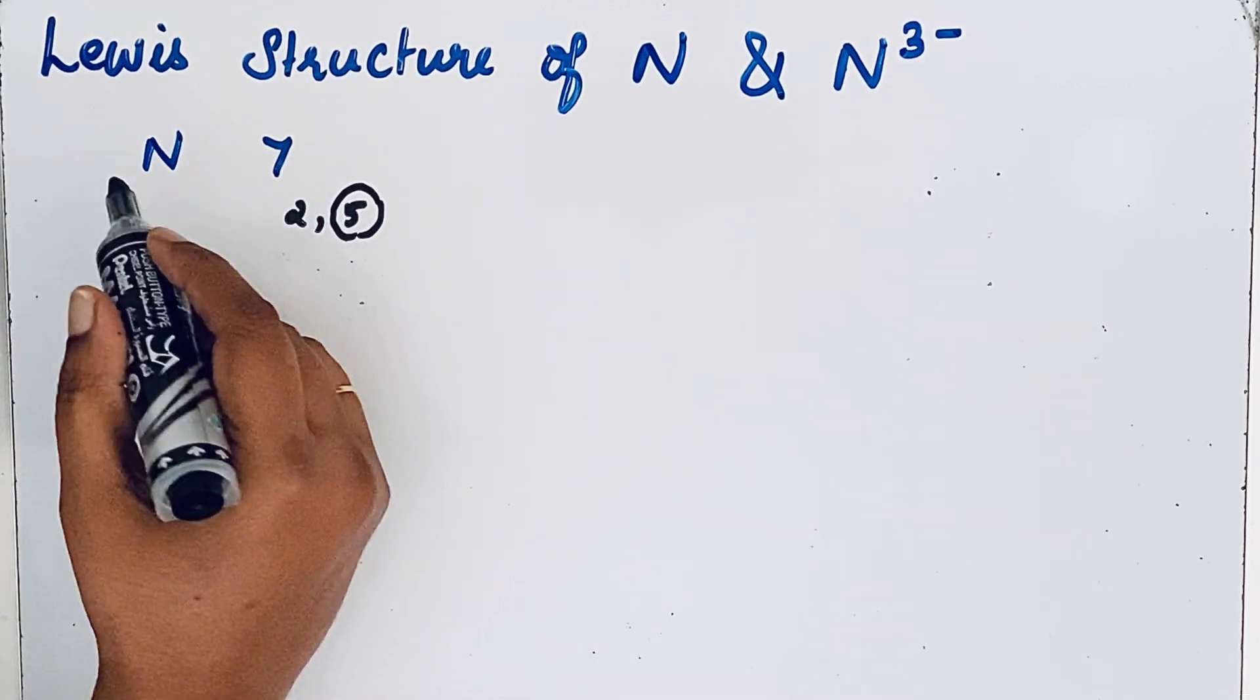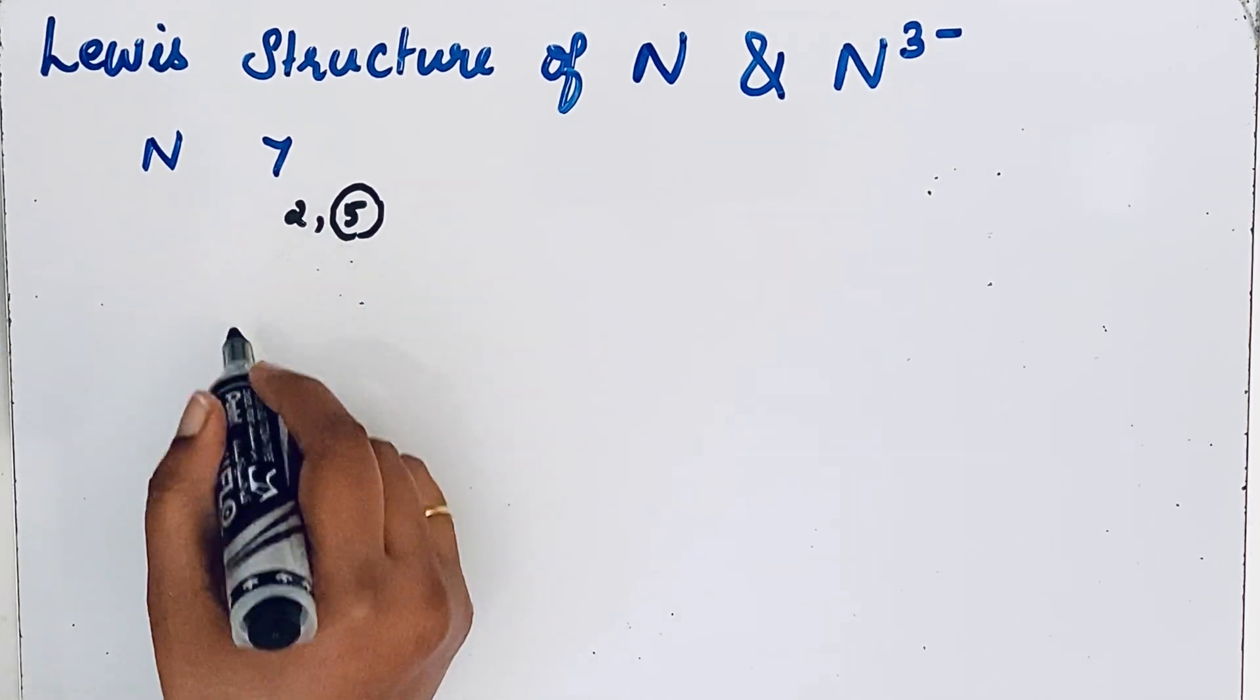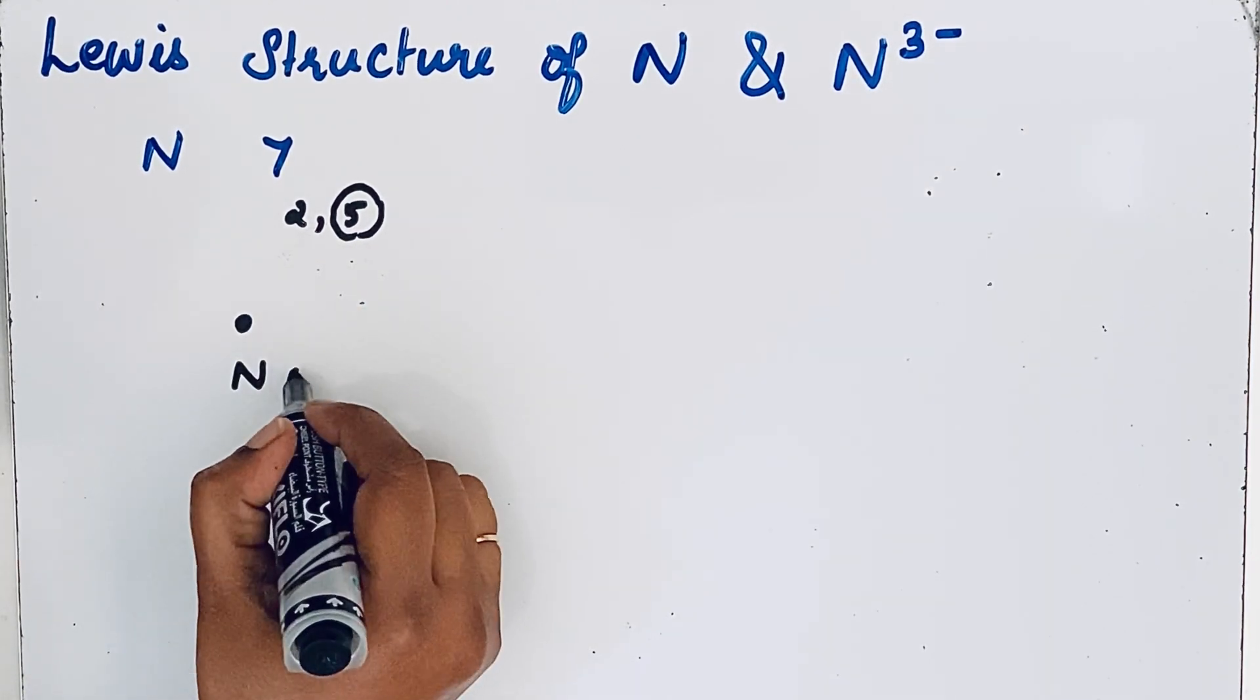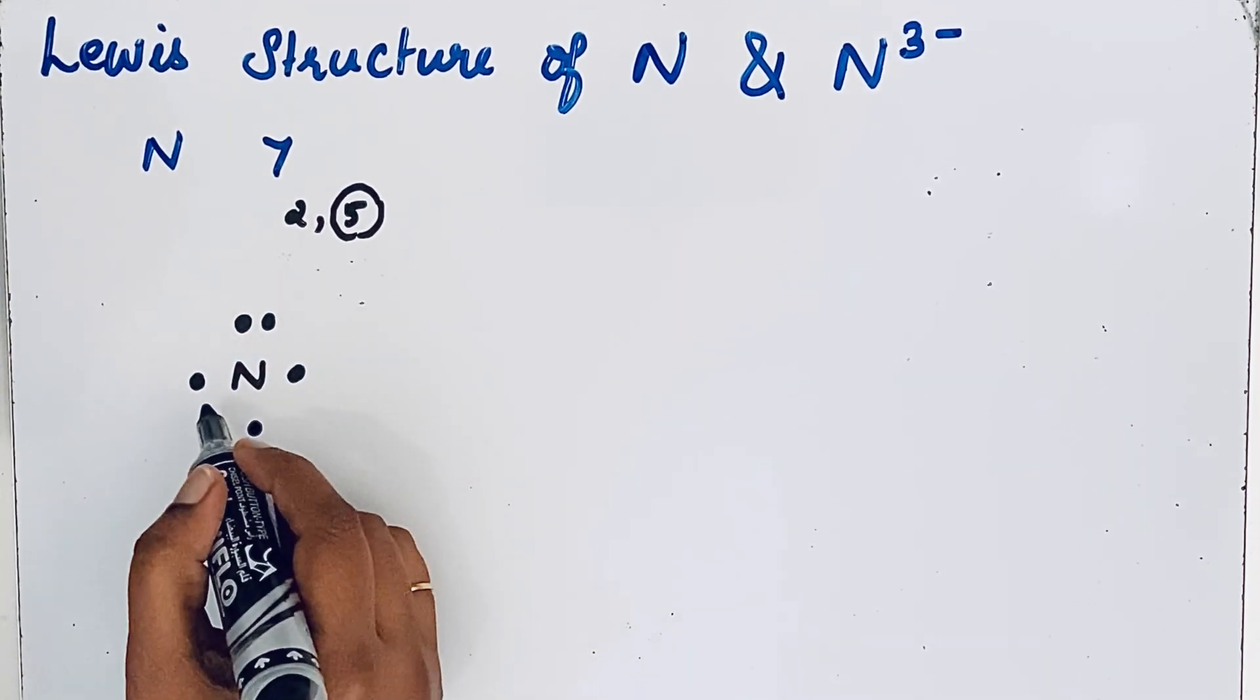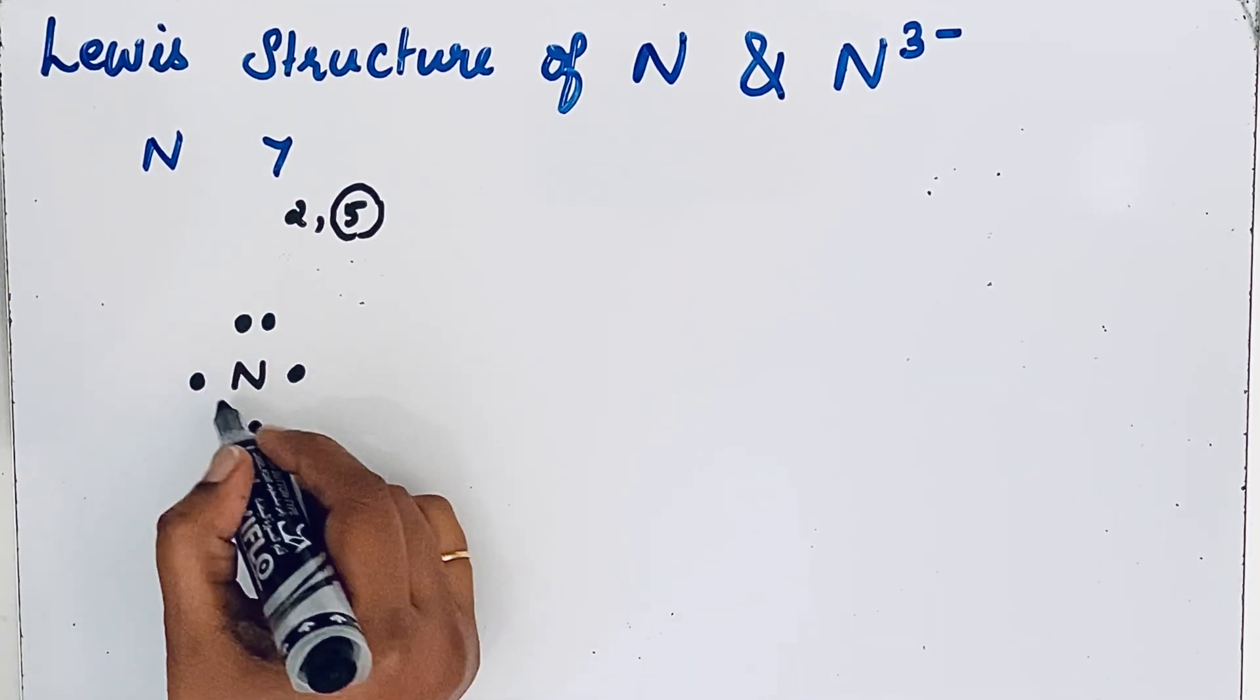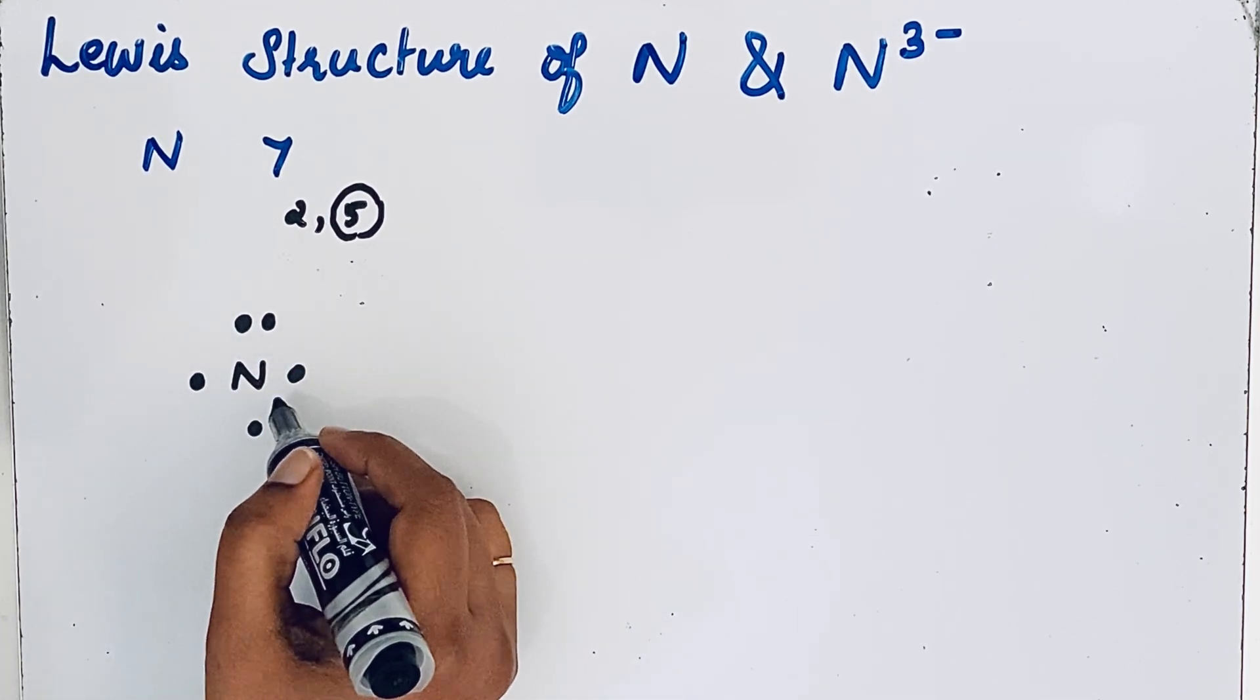In Lewis structure, we denote electrons in the form of dots. We are showing only the valence electrons. So first we write the symbol of nitrogen. There are five valence electrons: one, two, three, four, five. This means in nitrogen, three unpaired electrons and one lone pair electron is present.